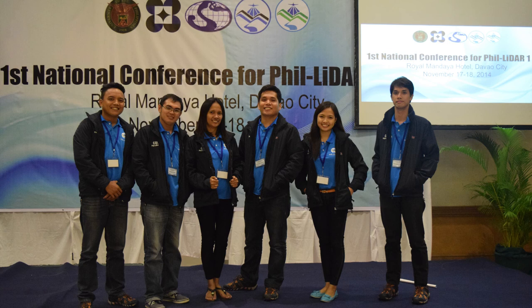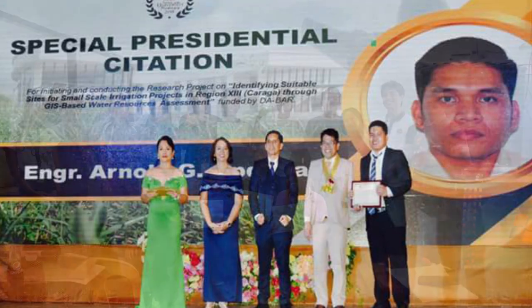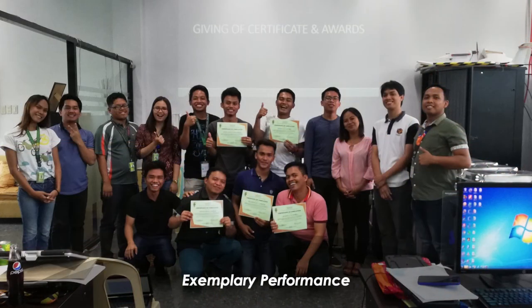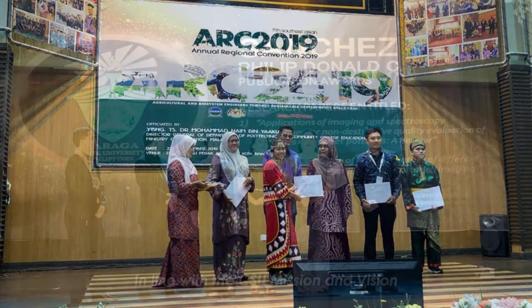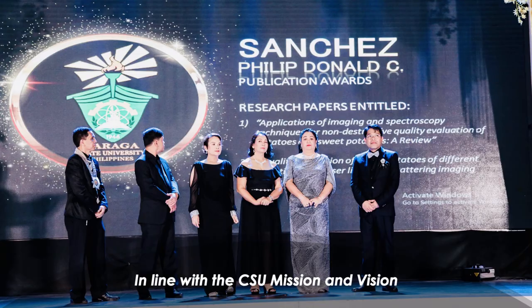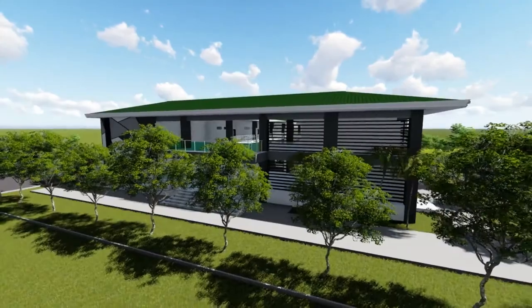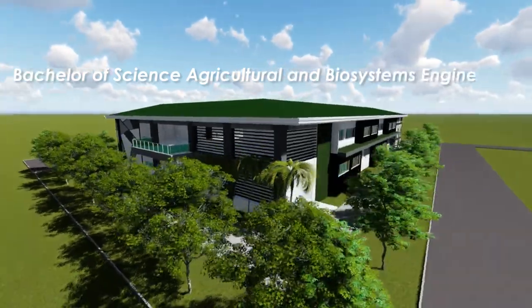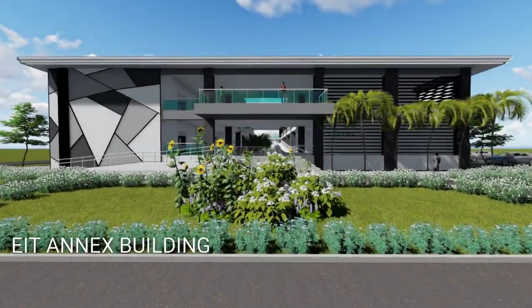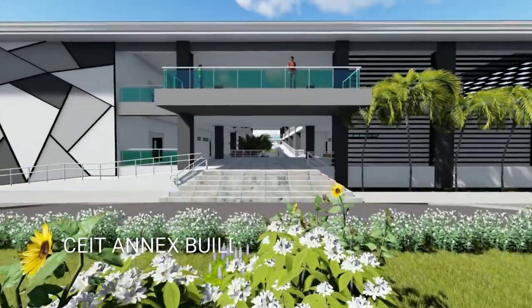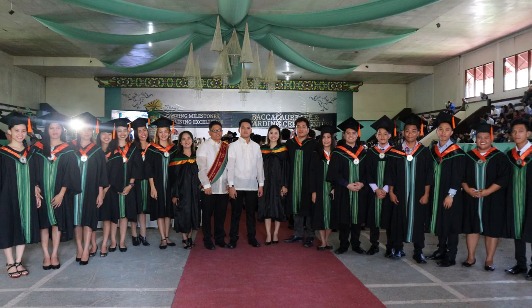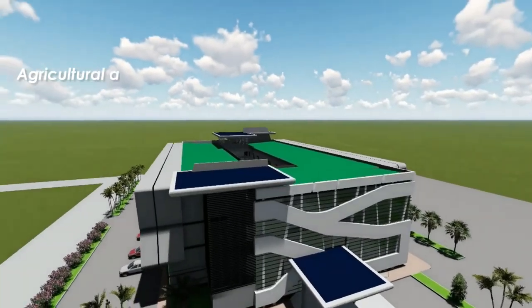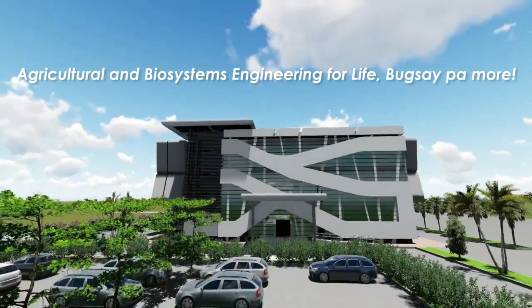Since 2005, the Bachelor of Science in Agricultural and Biosystems Engineering Program of Caraga State University has shown promising and exemplary undertakings in the areas of instruction, research, and extension, in line with the mission, vision, and goals of the university. The program will continue to uphold the core values of Caraga State University, aiming higher and better for the continued success of the program, the college, and the university. Agricultural and Biosystems Engineering for Life — Bugsay Pa More!